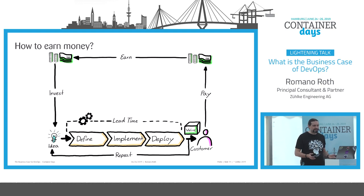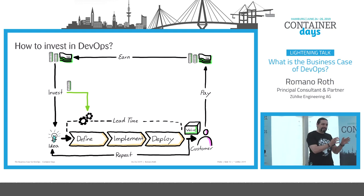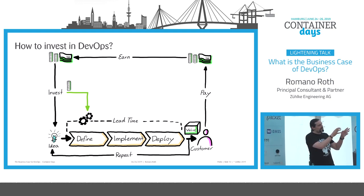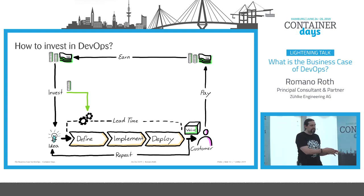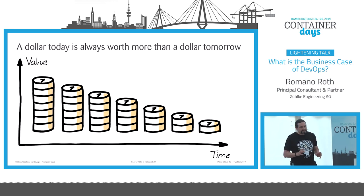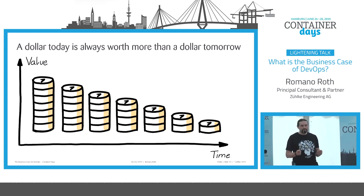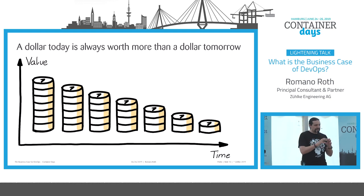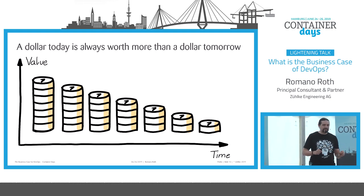How do we invest into DevOps? We invest by taking some of this money and using it to improve the value chain. Instead of putting that money into new ideas, we use it to improve the lead time of our value chain. It is essential to understand the economic concept of time, value, and money — a euro today is always worth more than a euro tomorrow. So always invest as early as possible because of the earning capacity in the future.